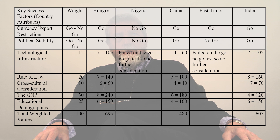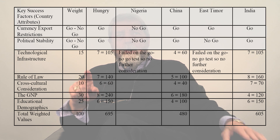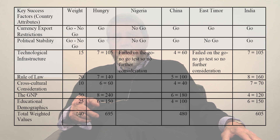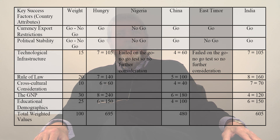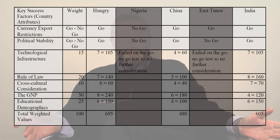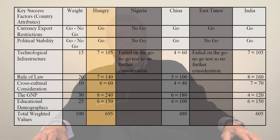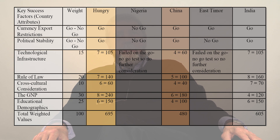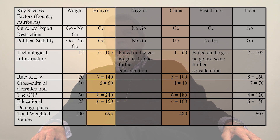The key success factors necessary for a hypothetical firm to succeed in a host country are entered onto the table: the presence of technology infrastructure, the rule of law, cross-cultural considerations, gross national product, and educational demographics. Nigeria and East Timor have been rejected by the go-no-go considerations. The model suggests that Hungary might be the best choice to host our business, followed by India, with China being the last choice. You might establish a threshold that must be achieved before further research takes place — in this example, only countries achieving a weighted score of 600 would be considered, leaving only Hungary and India.